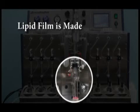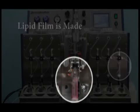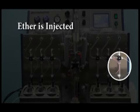The system then makes a lipid film on the wall of the test tube by vortexing under the appropriate temperature and reduced pressure. Ether is then injected into the test tube and dissolves the lipid film by vortexing under the appropriate temperature.